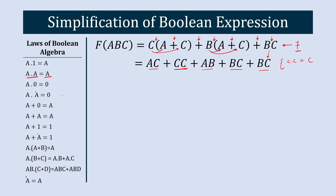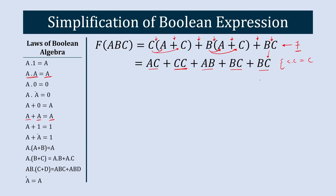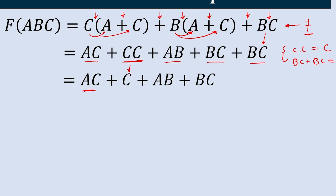Using the law A plus A equals A: if you assume BC as A, then BC plus BC simply becomes A plus A, which equals A. Making these two modifications, we get AC plus C — where C·C becomes C — and BC plus BC becomes just BC.